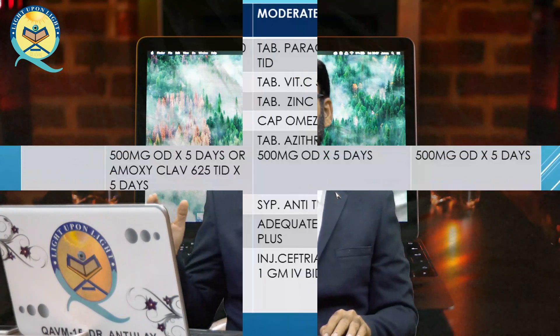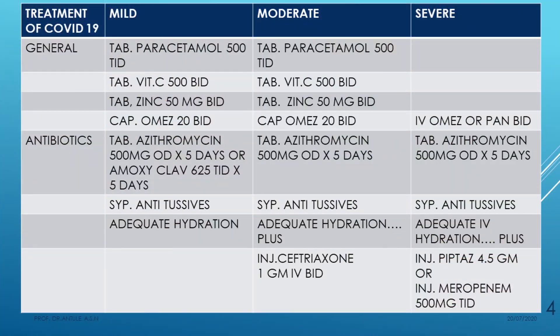In severe cases — SpO2 less than 90%, respiratory rate more than 30, CRP more than 125 — all mild and moderate measures apply. Add IV pantoprazole and IV antibiotics. Preferred IV antibiotics for secondary infection are piperacillin-tazobactam 4.5 gram three times daily, or meropenem 500 mg three times daily for five days.